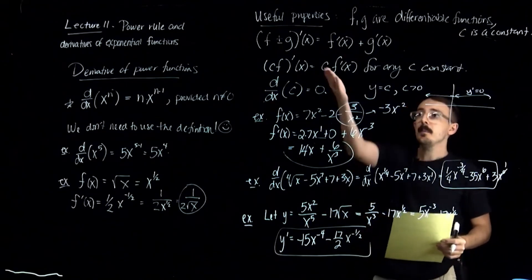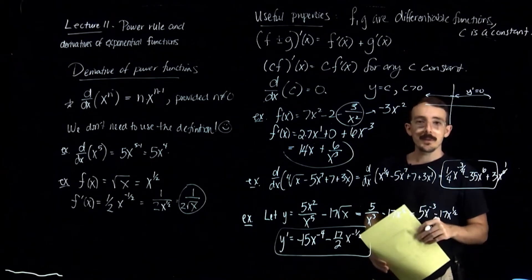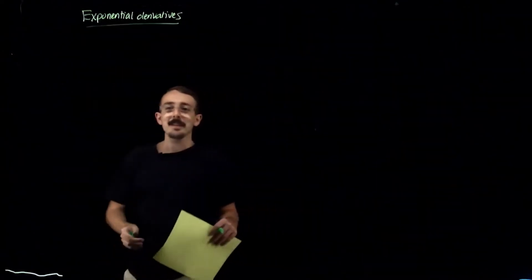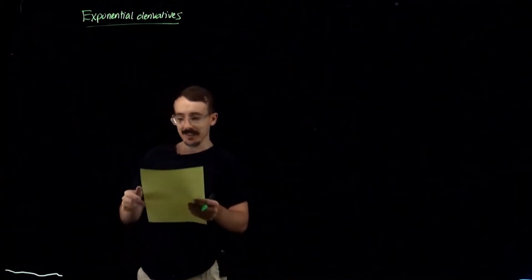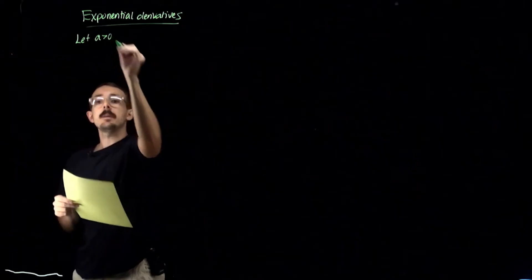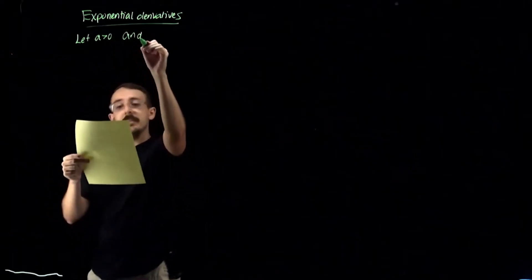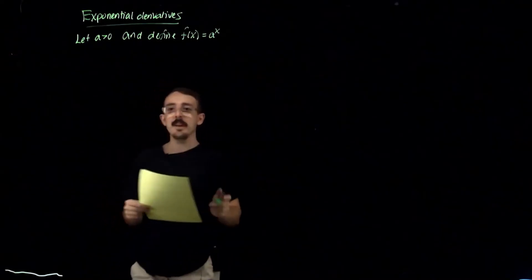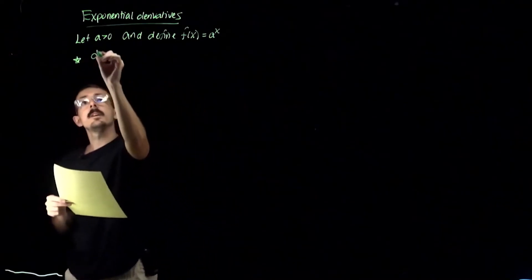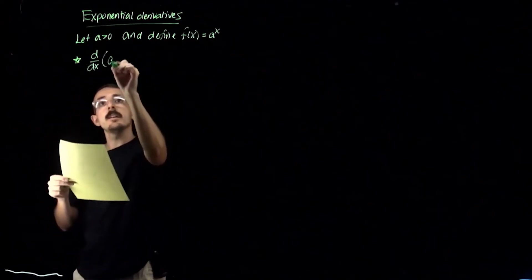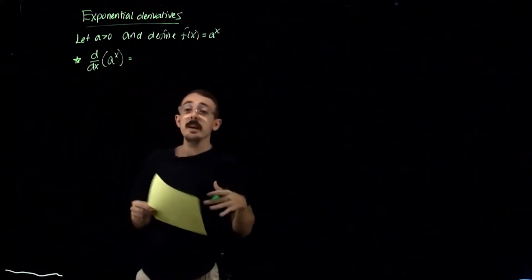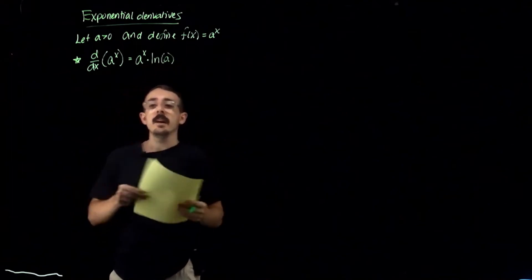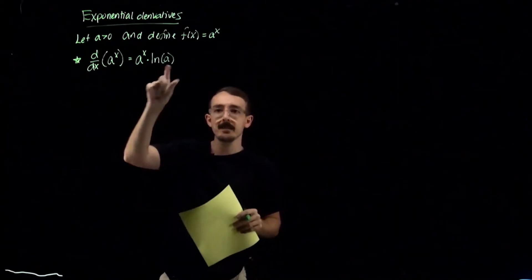So there was the power rule and some properties of the derivative. There are going to be many more rules and properties to come. Let's talk about our second derivative rule. We're going to let a be a positive real number and define f(x) = a^x. This is the natural log, ln, which has base e — our special log.